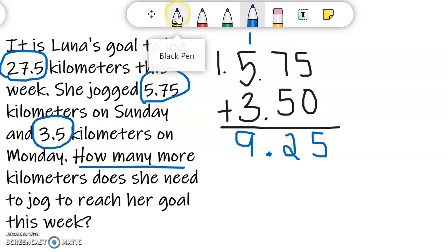Now I'm ready for step two. I'm ready to actually subtract. So I'm going to go back into my problem. And I'm subtracting 9 and 25 hundredths from 27 and 5 tenths. So 27 and 5 tenths goes up top because that's the larger number.